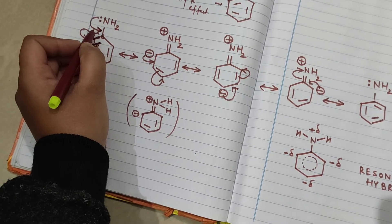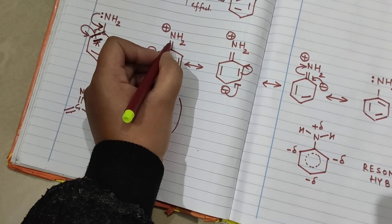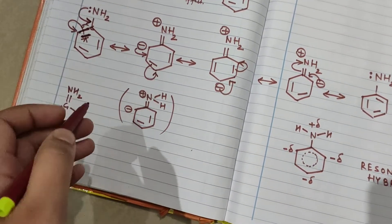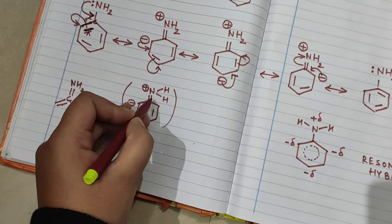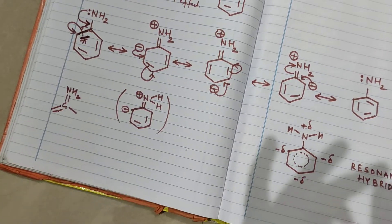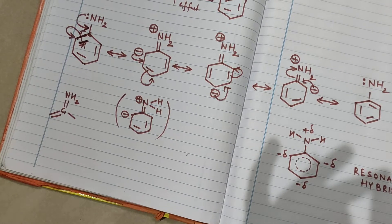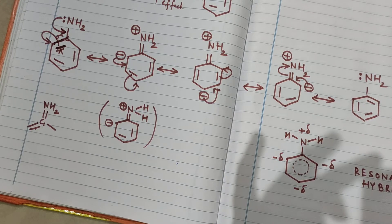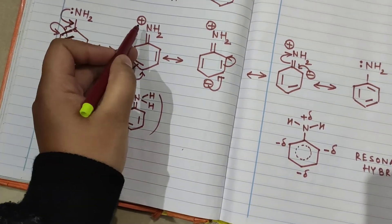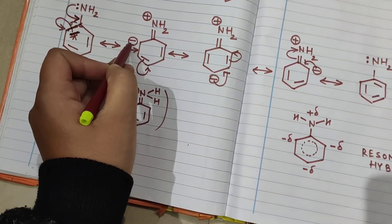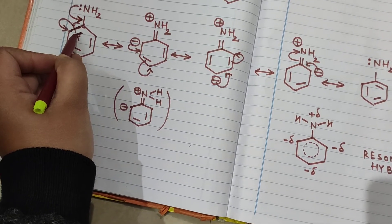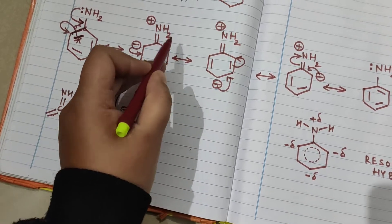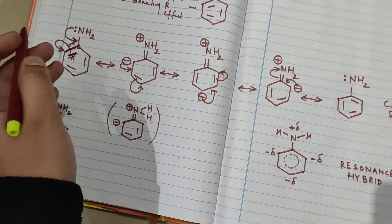Now look at nitrogen. The normal tendency of nitrogen is to form three bonds. Here, nitrogen is forming four bonds — one, two, three, and four. As nitrogen forms four bonds, the charge that comes on nitrogen is a positive charge. A negative charge also appears because the electrons involved in the bond form a charge, and this charge has a tendency to keep rotating in the molecule.